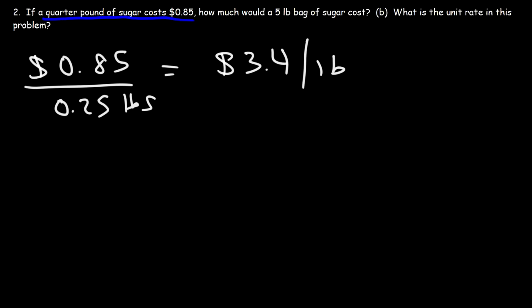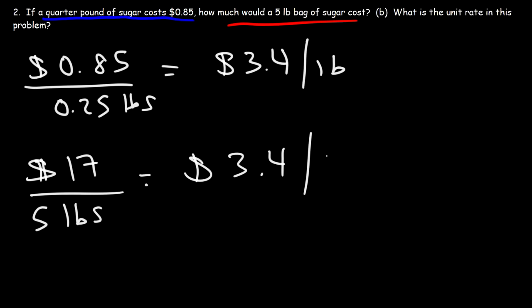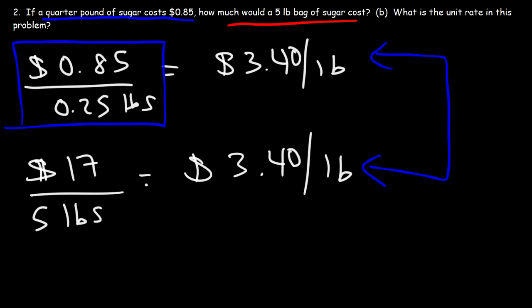Now I could also use the information that I got at the end of the first part. We said that a five pound bag of sugar costs $17. So if you take 17 divided by 5, you're going to get the same unit rate, $3.40 per pound of sugar. Now, you can't take 17 dollars and divide it by 0.25 pounds, because those two numbers don't correspond to each other. If you do that, you're going to get the wrong answer. But as long as you use two numbers that do correspond to each other, they should give you the same unit rate. And so that's it for number two.